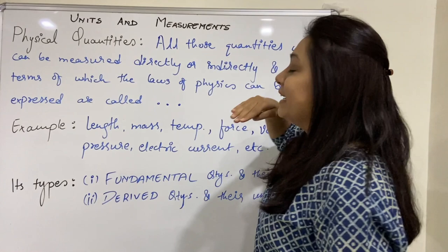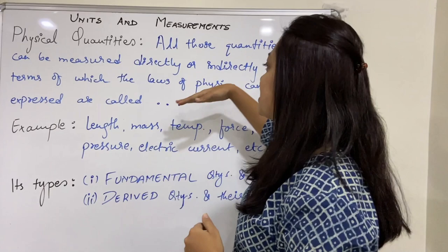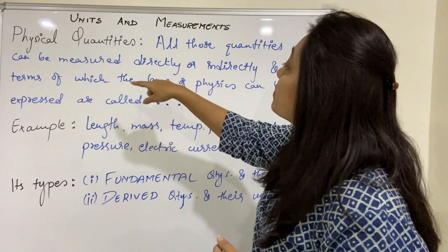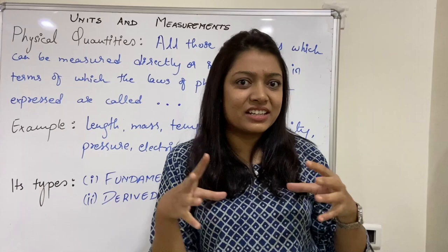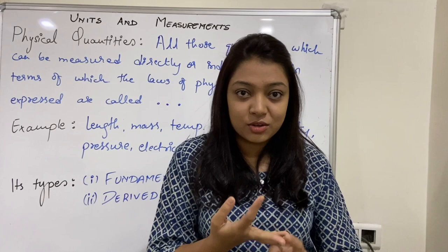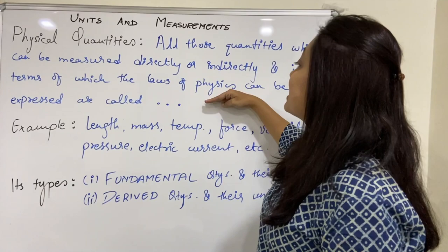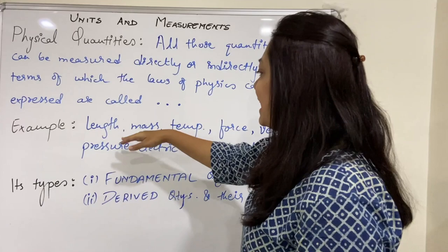Let us understand 'can be measured directly or indirectly.' Height, mass — yeh sab directly measure kar sakte hai. But Earth se Sun ka distance directly measure kar sakte hai? Nahin — so that comes under the category of indirect measurement. And when we say 'in terms of which the laws of physics can be expressed,' Ohm's Law V is equal to IR, or mass, force, and acceleration ka formula — Force is equal to mass into acceleration. Woh formula banane ke liye, force, mass, and acceleration pata hona chahiye. So laws of physics like F = ma are understood in terms of physical quantities. Examples: length, mass, temperature, force, velocity, pressure, electric current, etc.